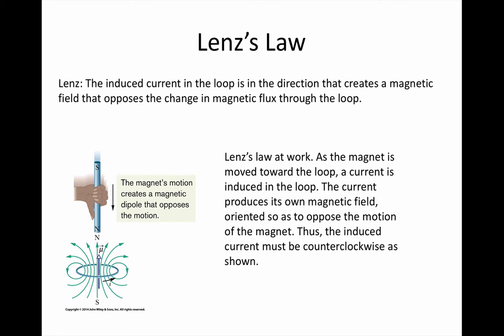If the magnet is moved away and the flux downwards through the loop decreases, the induced magnetic field will increase the downwards flux. The current now moves clockwise.